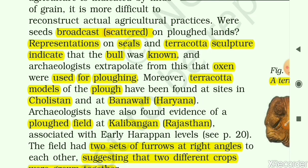Terracotta models of ploughs have been found at sites in Cholistan and at Banavali in Haryana. So we have both the terracotta image of the bull and the terracotta model of the plough, indicating that both existed in the Harappan civilization. Banavali in Haryana is very near to us.